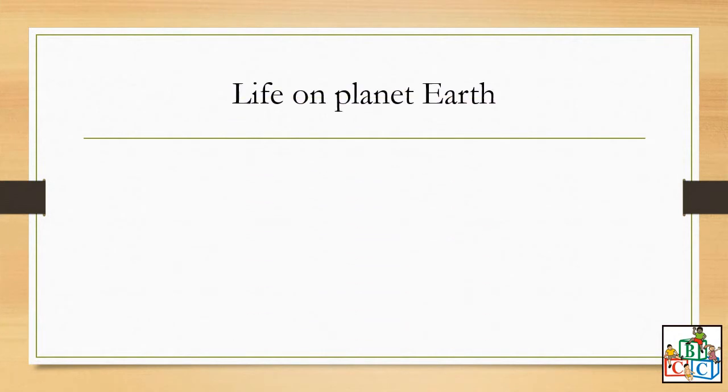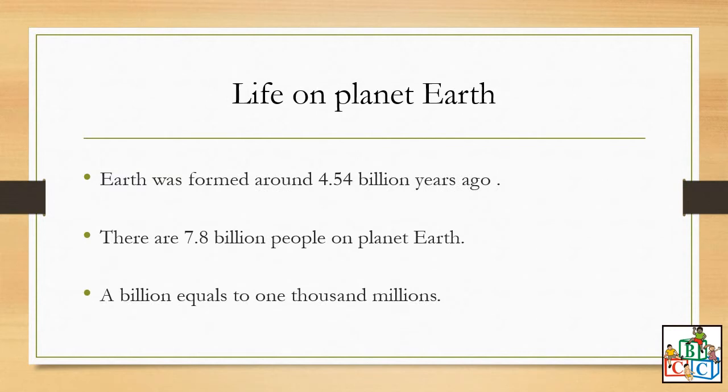We just read in our book that Earth is the only planet in the solar system on which life exists. The Earth was formed around 4.54 billion years ago. Very, very old. There are 7.8 billion people on planet Earth. So do you know what is a billion? A billion equals to 1,000 million.